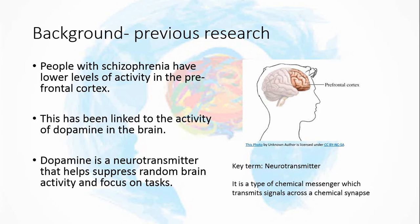Let's look at the previous research that led to this study. There's been lots of research looking at brain activity in people who have schizophrenia, and what's been noticed is a reduced level of activity in the prefrontal cortex - the part of the brain at the front in your forehead region. That low level of activity has also been linked to the neurotransmitter dopamine. Dopamine helps to suppress random brain activity and helps you focus on tasks. The suggestion is that this is lacking in schizophrenic patients, which can lead to them not being able to focus, and perhaps that's where things like hallucinations might come from.